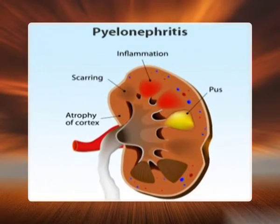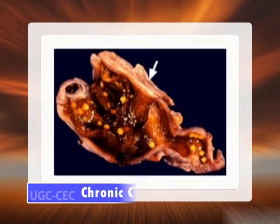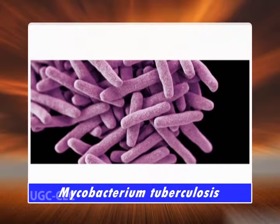Second, recurrent attacks of acute inflammation: when repeated bouts of acute inflammation culminate in chronicity of the process — for example, recurrent urinary tract infection leading to chronic pyelonephritis, or repeated acute infection of the gallbladder leading to chronic cholecystitis. Third, persistent infections by microbes that are difficult to eradicate.